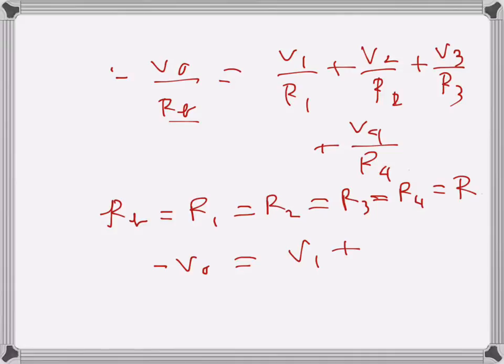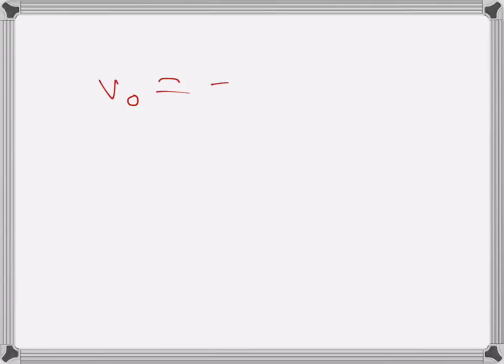What we get here is V1 plus V2—basically all the denominators are of the same value, so we can get rid of them. We can multiply both sides by R and they will be gone. So we can write V0 is equal to minus V1 plus V2 plus V3 plus V4.